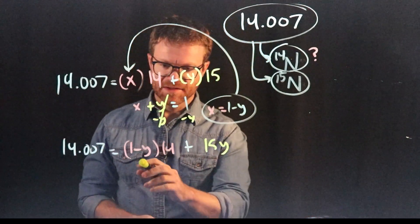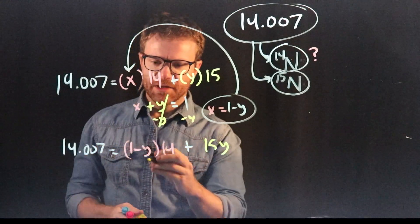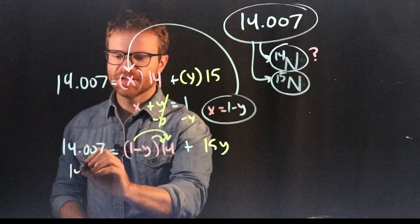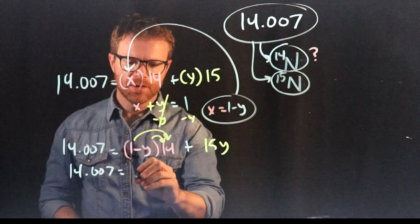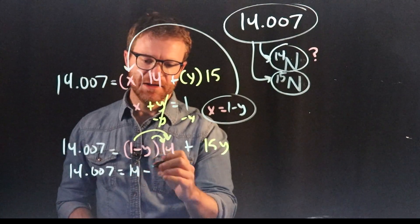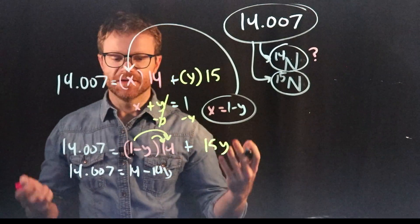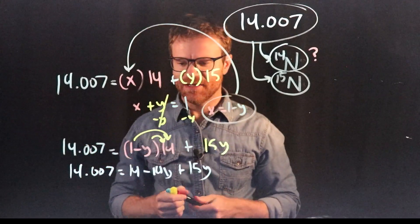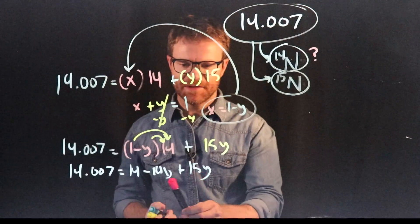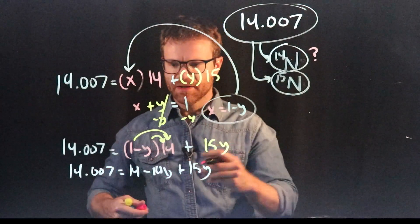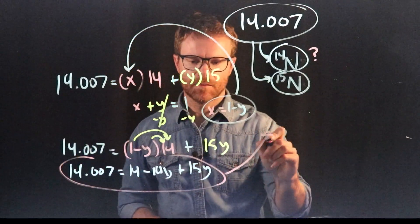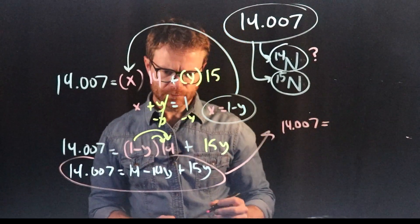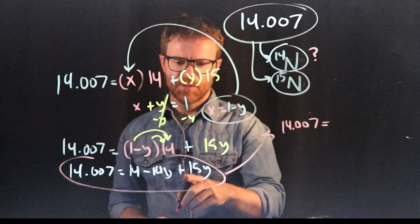Distributive property means that we need to, if we're multiplying by 1 minus Y, we need to multiply 14 by both of those things. And so let's rewrite this one more time. We get 14.007 is equal to 14, 1 times 14 is 14, minus 14Y, Y times 14 is negative 14Y, plus 15Y. Now we can do a little bit of simplification. So we have negative 14Y plus 15Y. Well, 15 minus 14 is just equal to Y, right? So if we were to rewrite this whole thing, we would get 14.007 is equal to 14 plus Y.